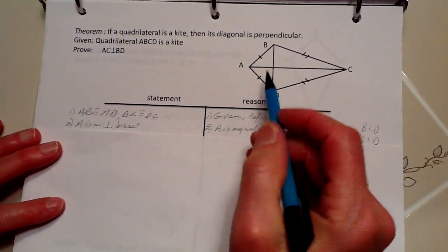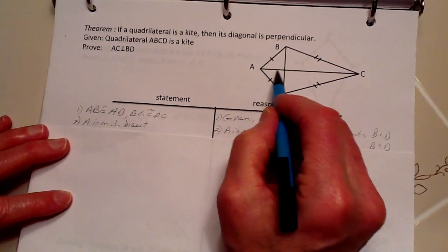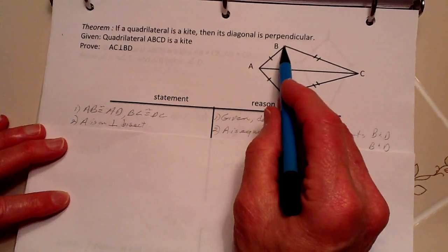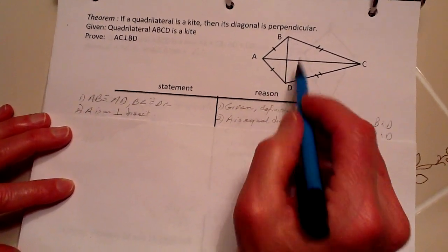Next, we say that A is on the perpendicular bisector, and the reason we can say that is that A is equal distance from the endpoints of B and D.